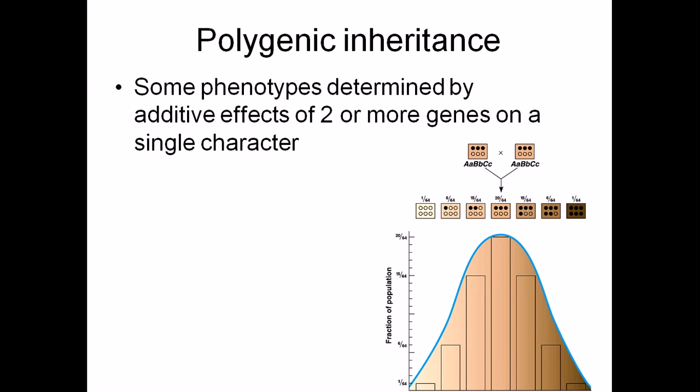For polygenic inheritance, there are multiple genes, meaning multiple alleles are involved, but the effect will be additive of one another, which is not the case for multiple alleles.